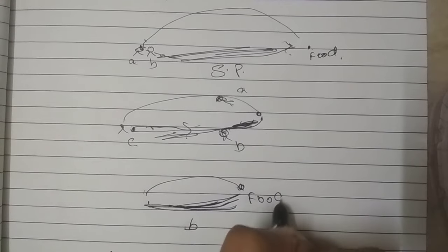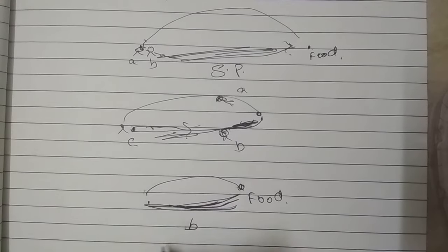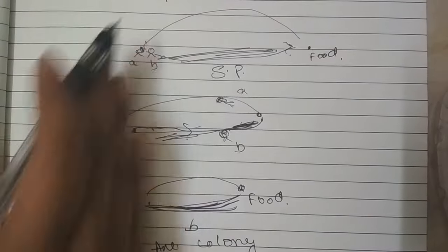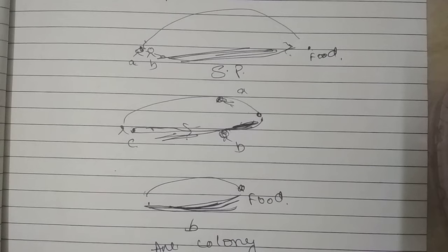In this way, the ants will find the shortest path to reach the food particle. Okay, this is about the ant colony. So we will be wondering how this matters in our artificial intelligence. Consider in our artificial intelligence there is a huge problem which is a combinatorial optimization problem.